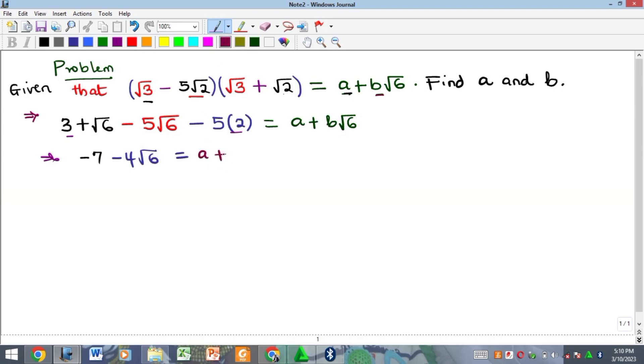Of course, the whole of this is equal to our right hand side, which is a plus b root 6. At this point you can see that what we have is exactly looking like what we have on the right hand side. So we'll try to compare now. The term that doesn't have a root must be equal to the a, and the one that has a root will be equal to this one.